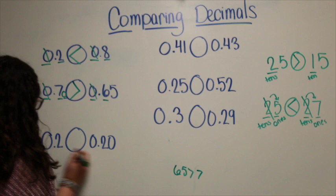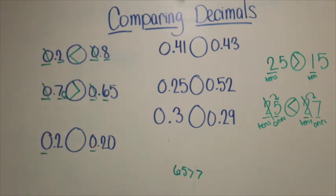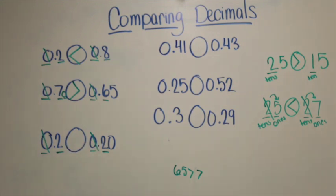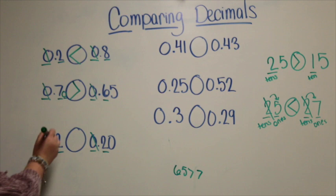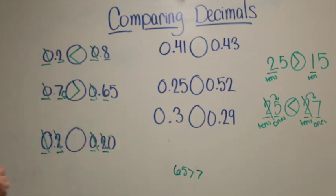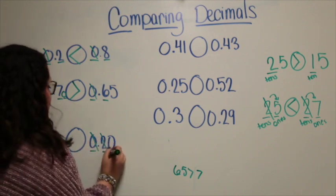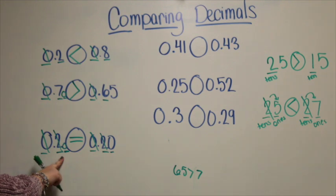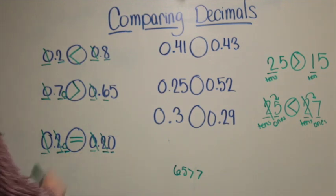Let's look at our next example. Start with my greatest place value, which is the ones place — they both have a zero, so that does not help me. I go to my tenths place and I can see they both have a two, so I can't use that place value either. I go to my next place value — the hundredths. This number isn't showing me the hundredths place value, so I know there is a zero there. I look at this number's hundredths and there is also a zero. So these numbers are equal — two tenths is equal to twenty hundredths.